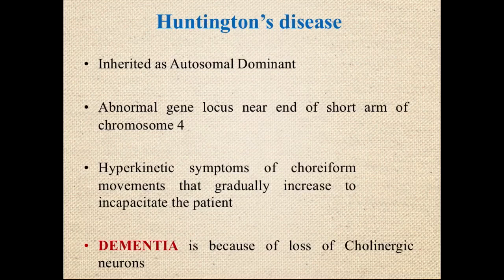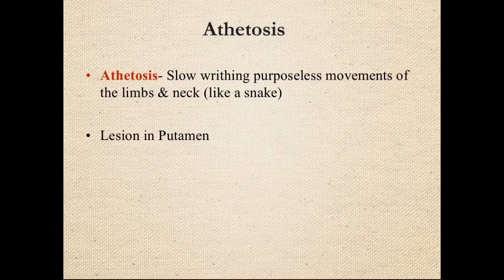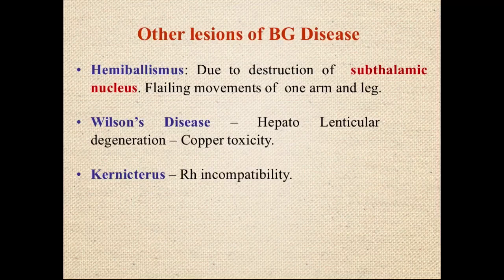Features of Huntington's disease include: behavioral and mood changes (anxiety, depression), cognitive impairment and dementia, and most characteristically, chorea — jerky, fidgety, involuntary movements. Athetosis involves slow, purposeless, serpentine movements of the limbs and neck and occurs mainly due to lesions in the putamen.